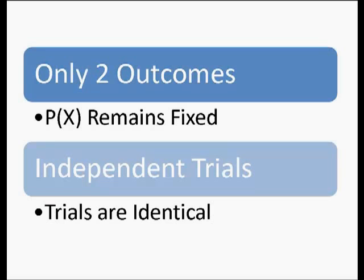Just to remind you before we get started, a binomial distribution has to meet four requirements. First, there have to be only two outcomes that we can classify as either success or failure. That doesn't mean there are only two possible results — it means we can classify as having either succeeded or failed. The probability of an outcome has to remain fixed, the trials need to be independent, and they have to be identical. So we can't go changing the rules, changing the trial, or changing the probability as we move through these binomials.